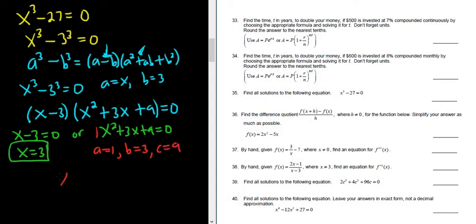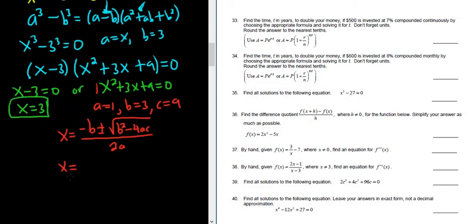The quadratic formula says that x is equal to negative b plus or minus the square root of b squared minus 4ac all over 2a. 2 times 1. So x will be equal to, b is 3.